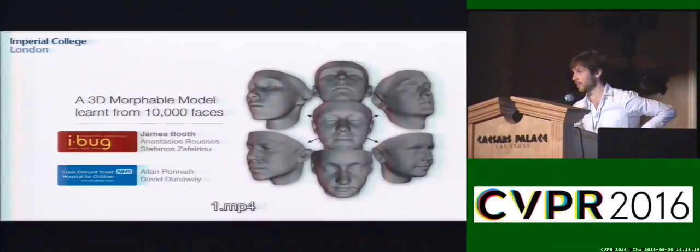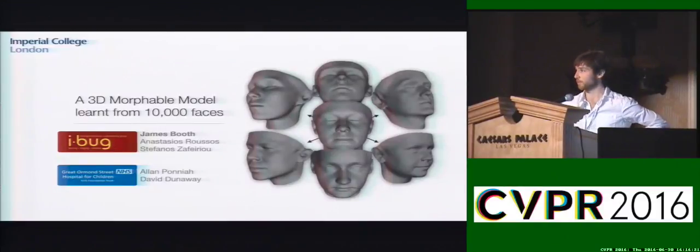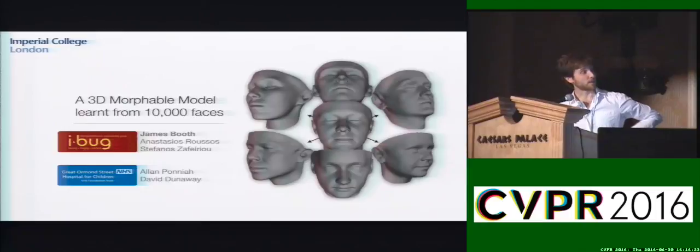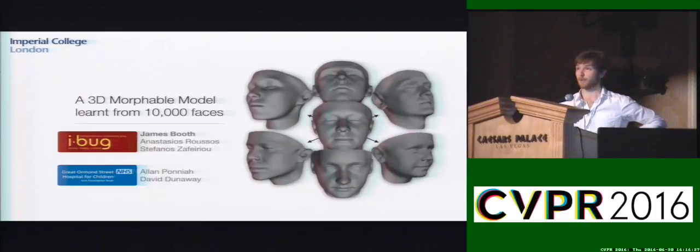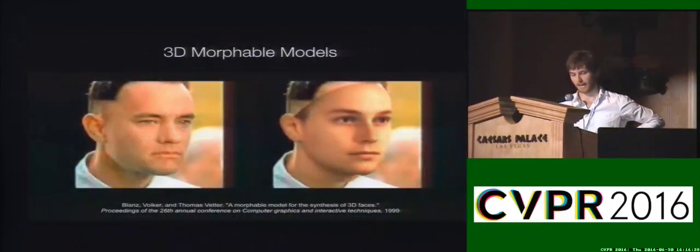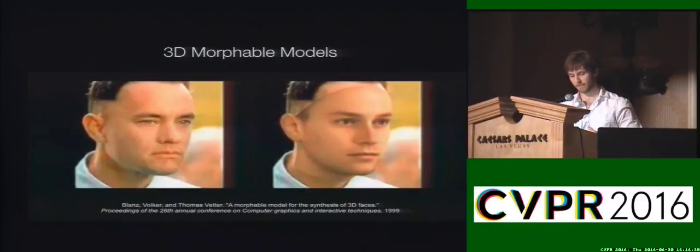Hi there, my name is James Booth. I work at the iBook Group at Imperial College London. This work, titled A 3D Morphable Model Learned from 10,000 Faces, is a collaboration between iBook and Great Ormond Street Hospital.